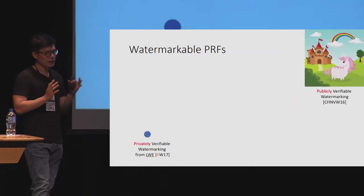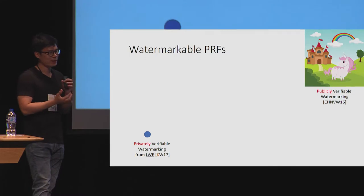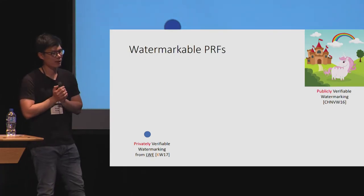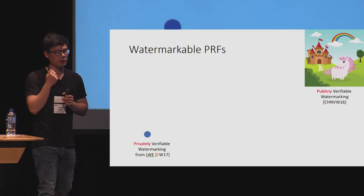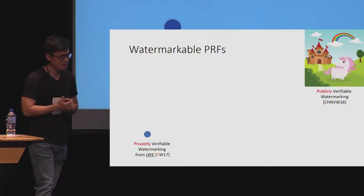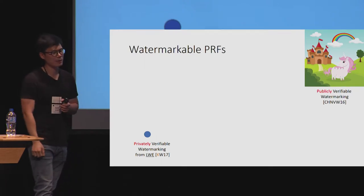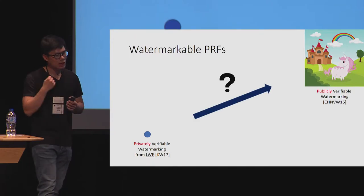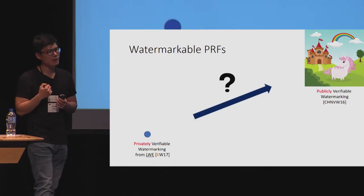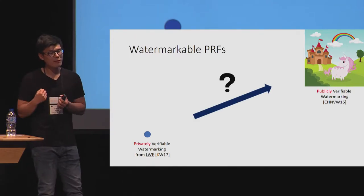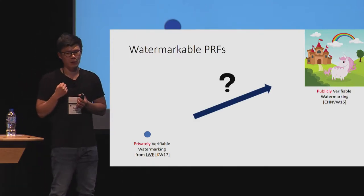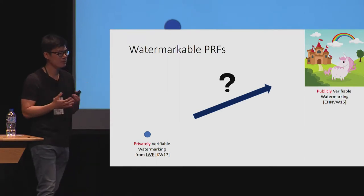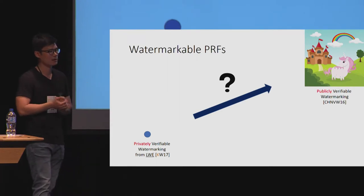So this is how the landscape looked in 2017: we had a privately verifiable watermarking scheme from the learning with errors assumption, and a publicly verifiable watermarking scheme from obfuscation. The big driving question in this area was whether we could go from a privately verifiable watermarking scheme to a publicly verifiable one just relying on standard assumptions.